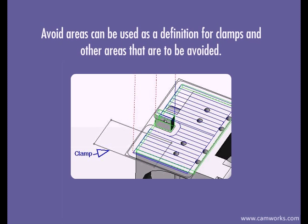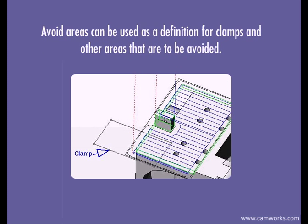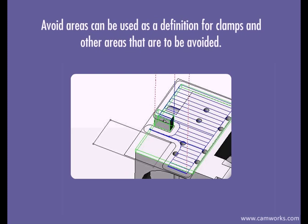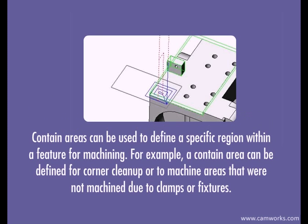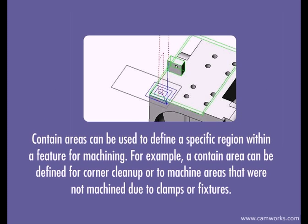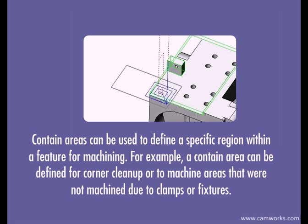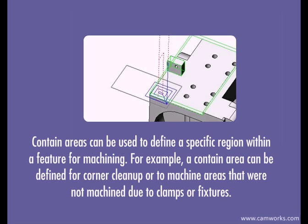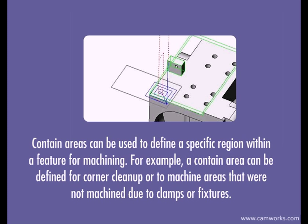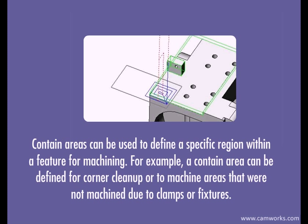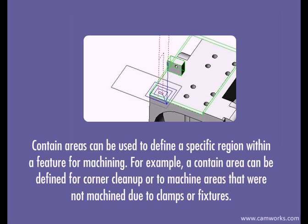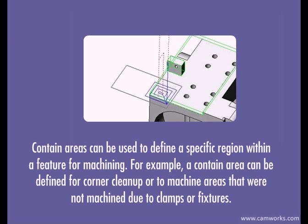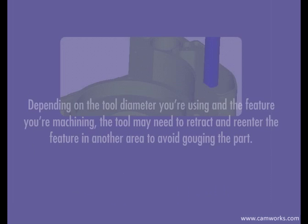Avoid areas can be used as a definition for clamps and other areas that are to be avoided. Contain areas can be used to define a specific region within a feature for machining. For example, a contain area can be defined for corner cleanup or to machine areas that were not machined due to clamps or fixtures.